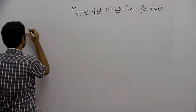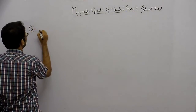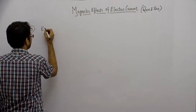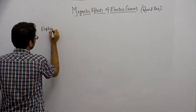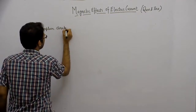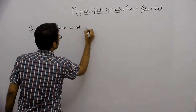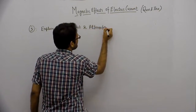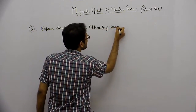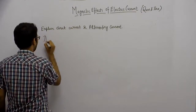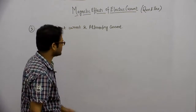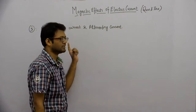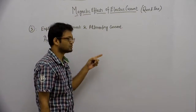Our next question is question no. 3 — Explain Direct current and Alternating current. Direct current होता क्या है कि वो current जिसमें उसके direction same होती है, मतलब time के साथ direction change नहीं होती और उसकी value भी constant रहती है।